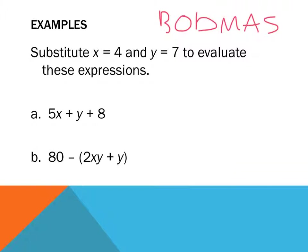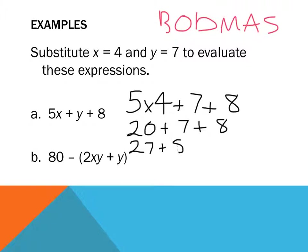So, x equals 4. That's 5 times 4 plus y equals 7, so y plus 8. What's 5 times 4? 5 times 4 is 20 plus 7 plus 8. And I'm just going to do it really slow one step at a time. 27 plus 8 equals 35.